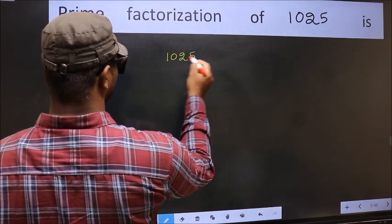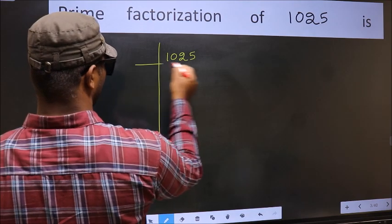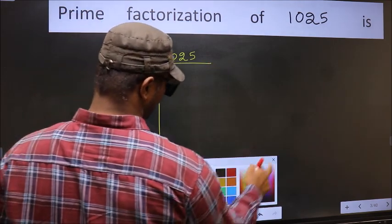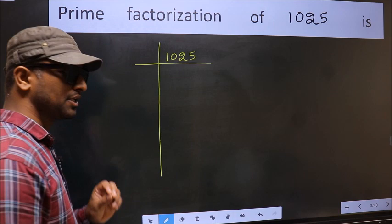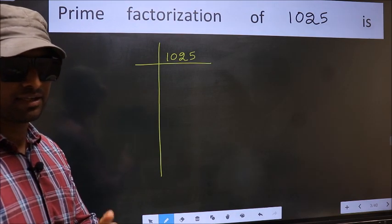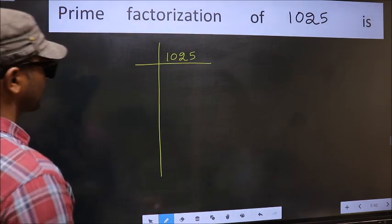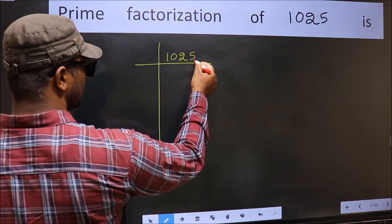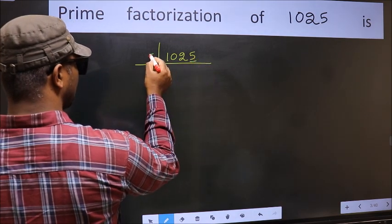1025. This is your step 1. Next. For this number, last digit 5, so directly take 5.